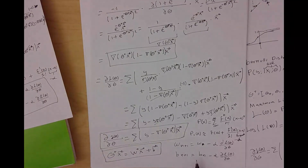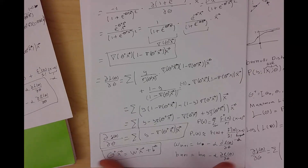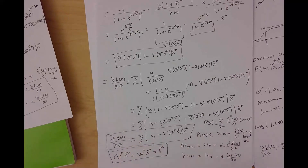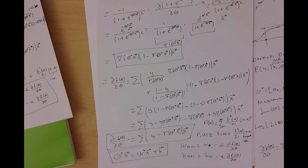The proof of why this converges is a topic for another video. But I think for this time, this is an explanation of how the very simple logistic regression and simple artificial neural networks work. Thank you, bye.